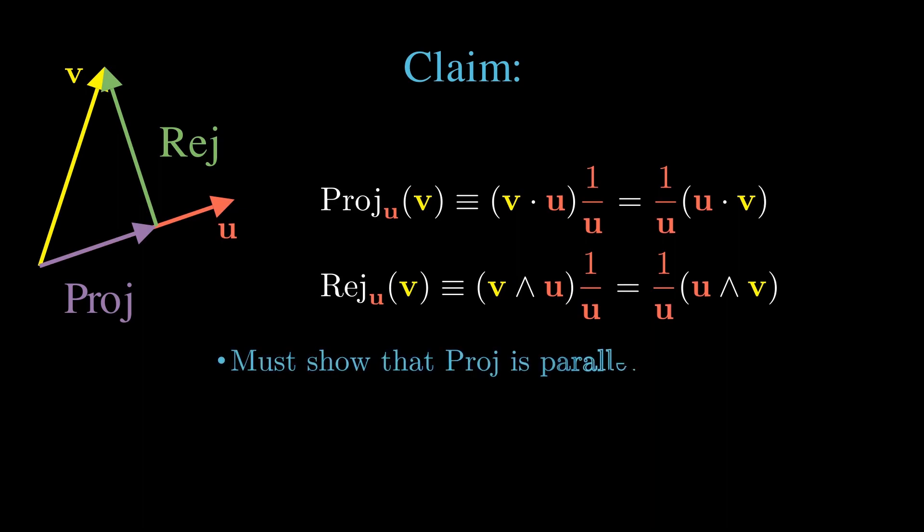To substantiate the claims that these are the rejection and projection, we need to show that the projection is parallel to u, which might not be obvious given that u inverse is an unfamiliar quantity. We need to show that the rejection is perpendicular to u.